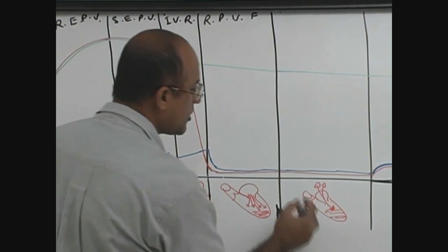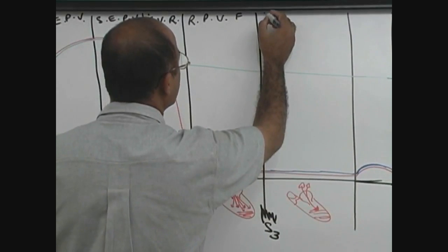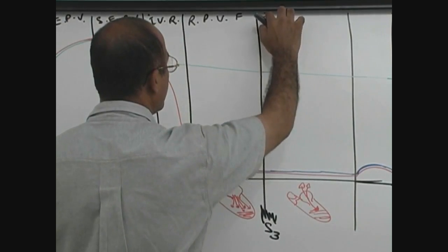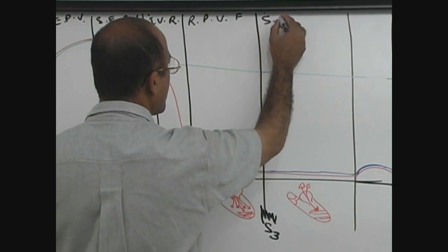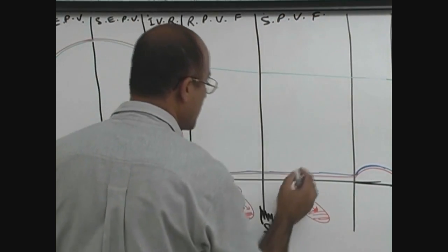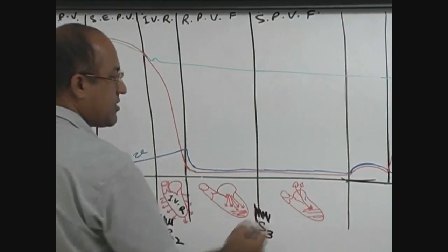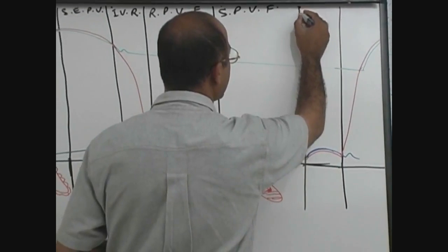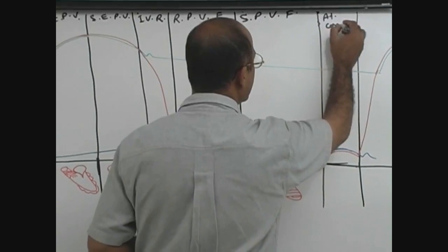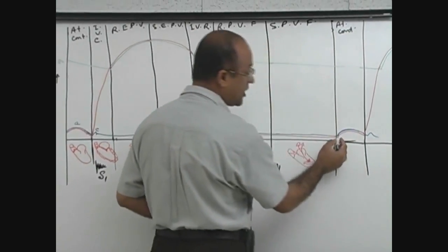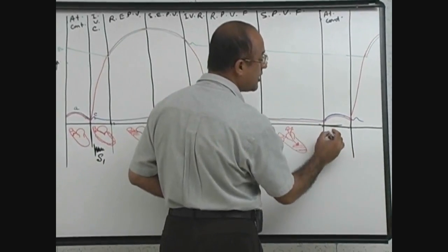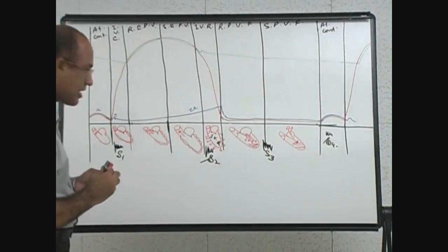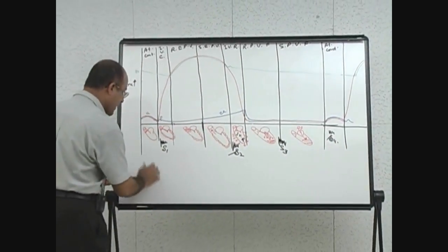This phase was called not rapid but slow passive ventricular filling, which is usually the longest phase. Then the next cycle starts with atrial contraction, and if it is contracting against a stiffened ventricle, only then a sound may be produced which is called S4.